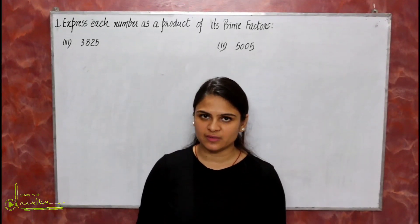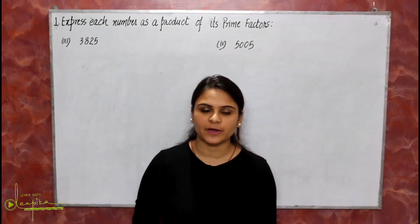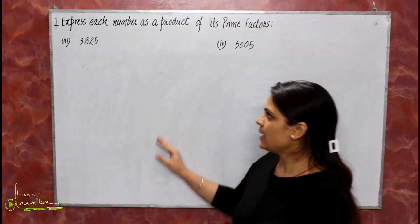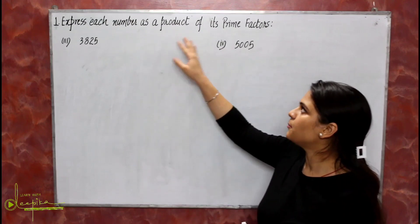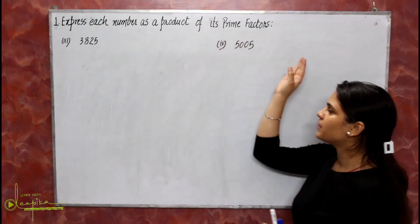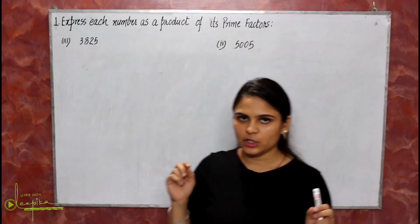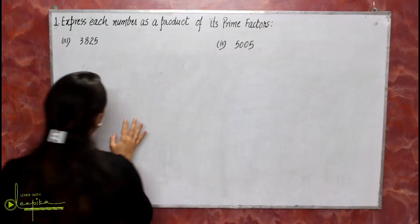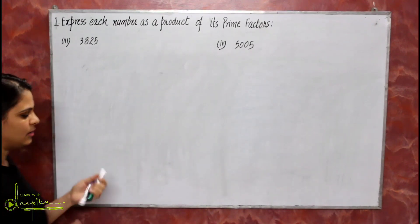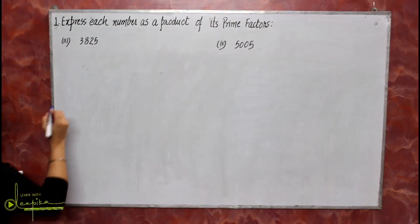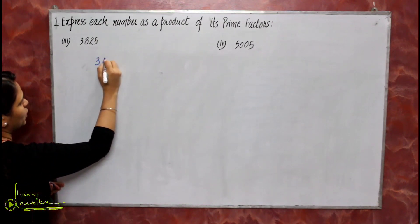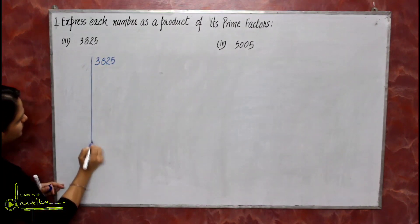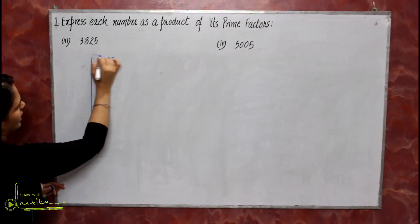Now we will start Exercise 1.2 from NCERT. Question number 1: express each number as a product of its prime factors. There are 5 parts; I'm taking just 2 because the rest are very easy and you can solve them similarly. First part is 3825.